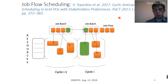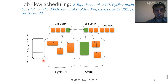In cyclic scheduling, we have cycles and scheduling intervals during which we have reliable information about each node's local schedule. Based on this data, we can allocate resources and reserve resources to execute the user jobs.